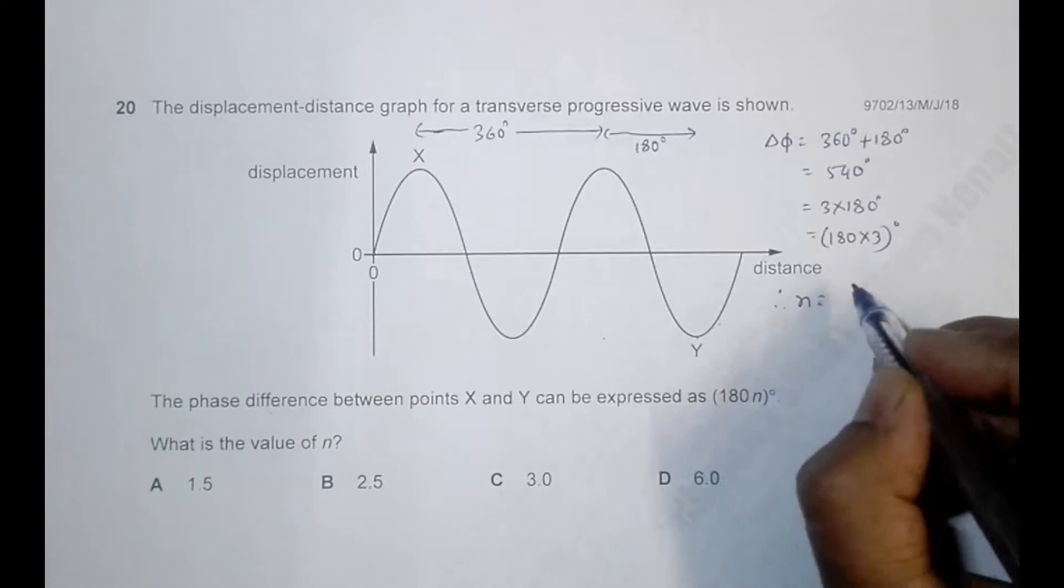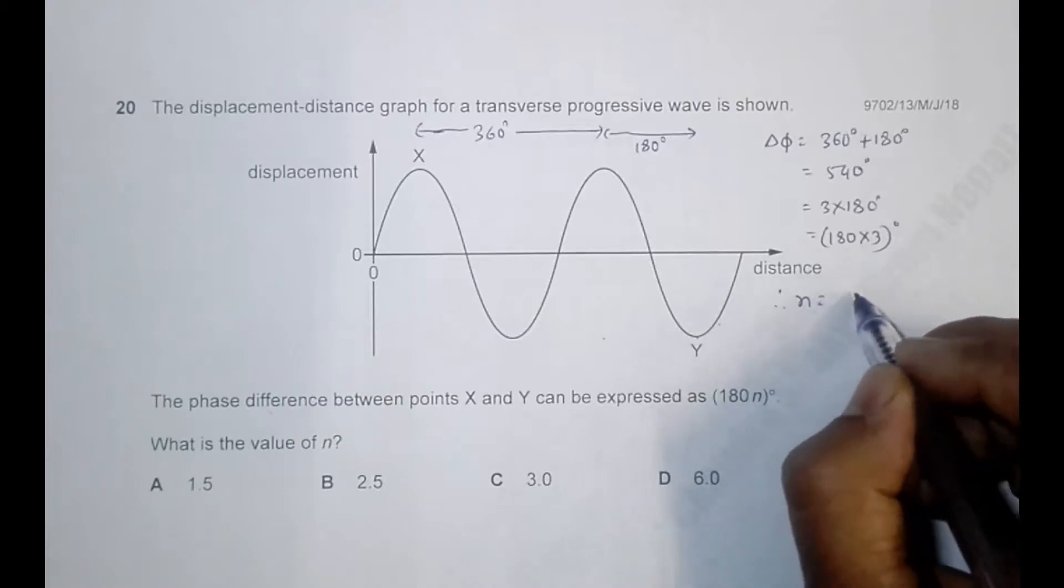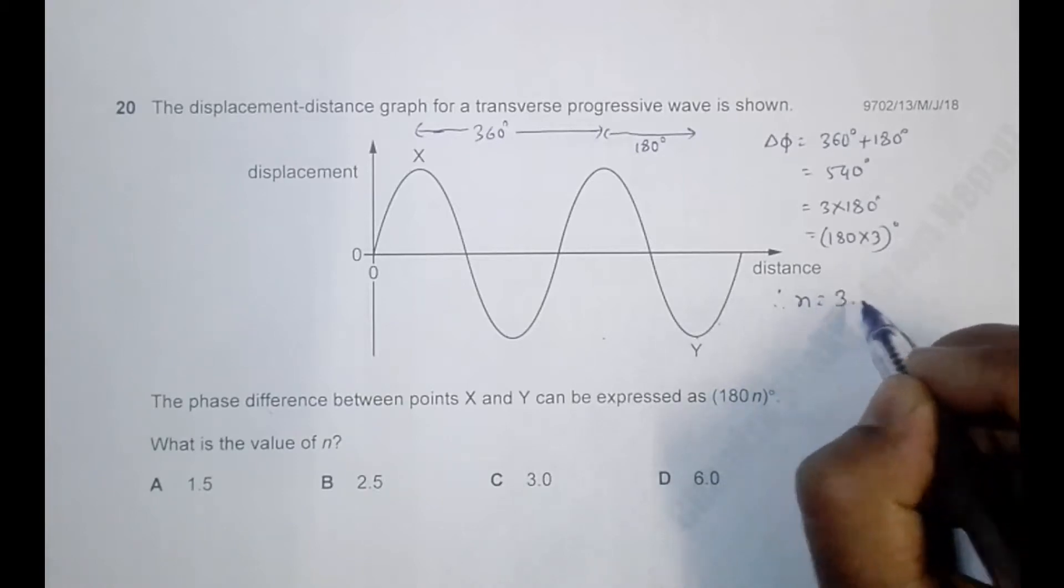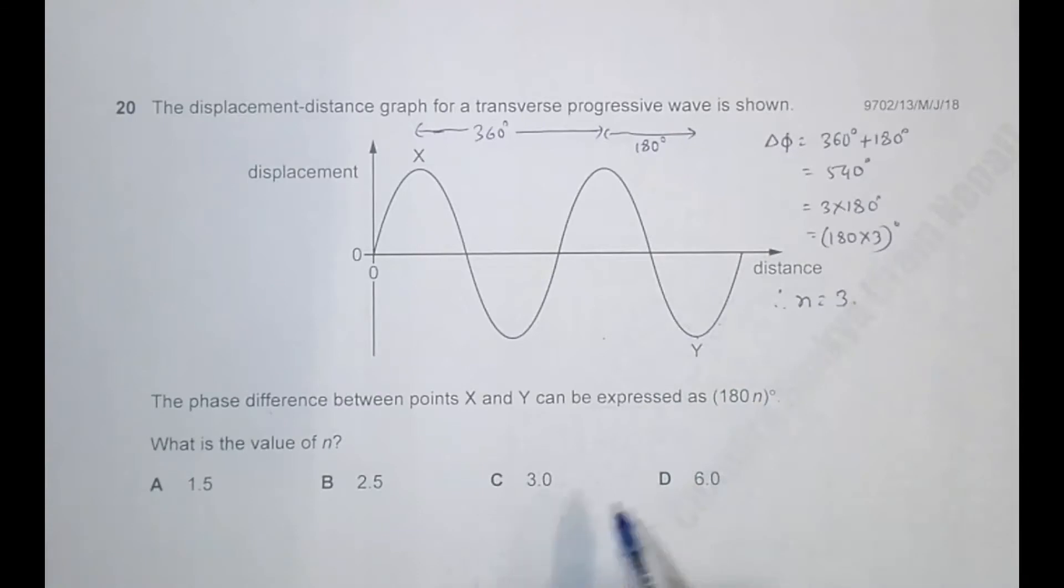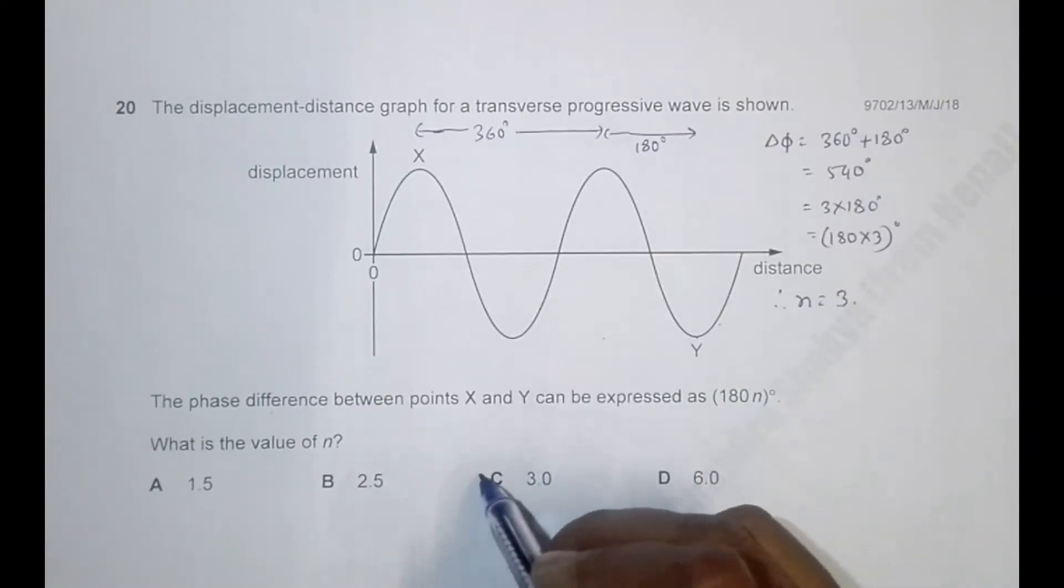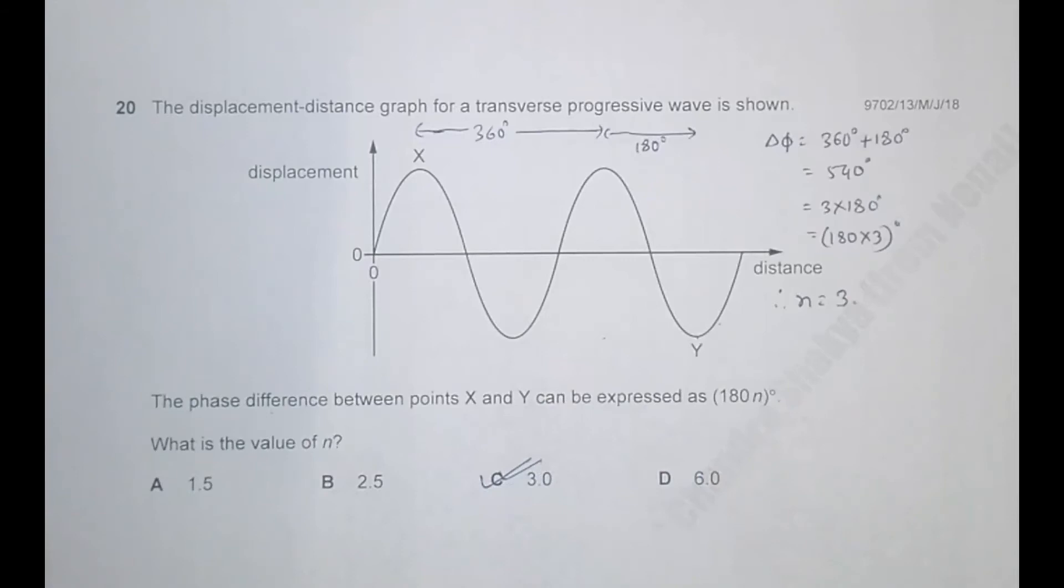is equal to 3. Since n equals 3, the answer for us will be choice number C. So it should be the correct answer.